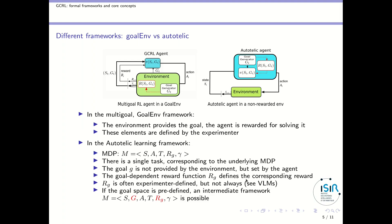Now let's see a different distinction which is also very important. In the multi-goal case, the goal can come either from the environment or from the agent itself. In the goal-env framework — named after the gymnasium environment type — there is a special interface to interact with environments that have a goal. In this multi-goal case, the environment provides the goal and the agent is rewarded for solving it. There is a goal generator inside the environment, and the reward function depends on the state and the goal. These elements — the goal generator, etc. — are defined by the experimenter when they define the environment.